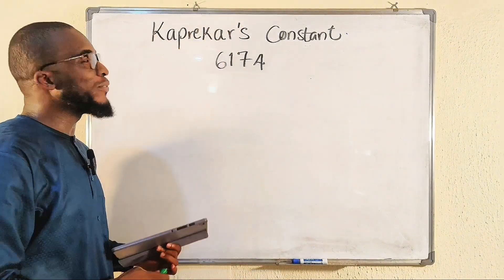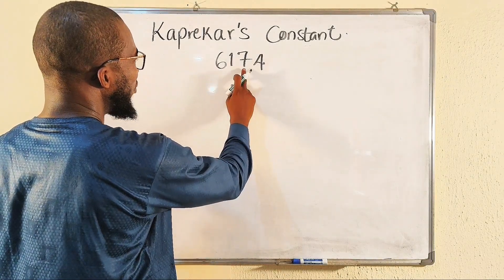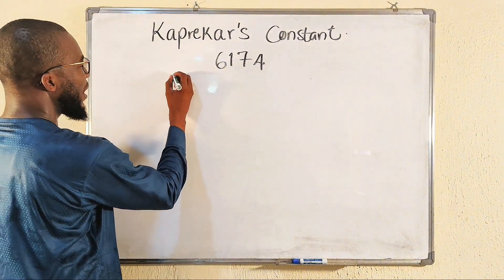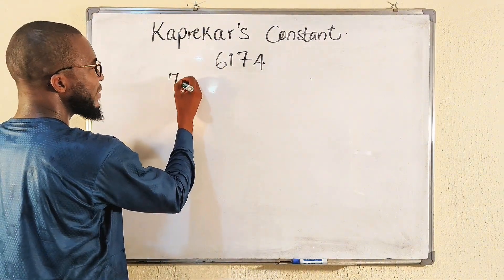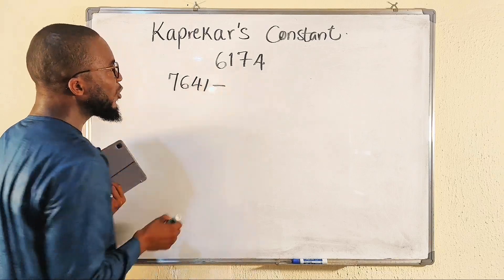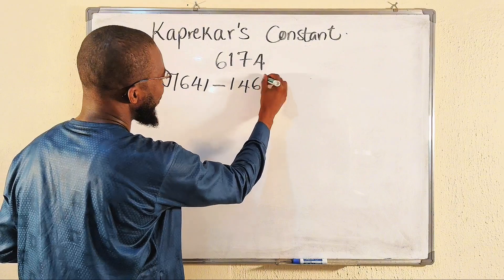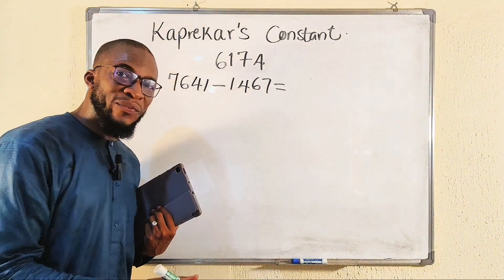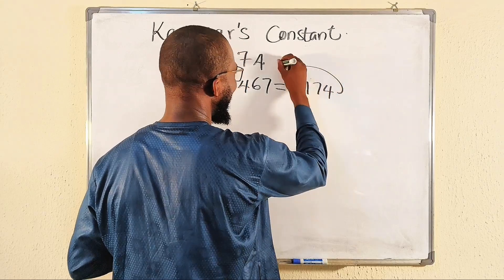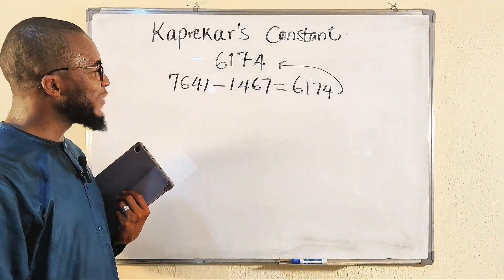So let's start with the number itself. How can we create the biggest possible number? Here it would be seven thousand six hundred and forty-one. The smallest will be one thousand four hundred and sixty-seven. Once you take the difference, you must get 6174 — exactly Kaprekar's Constant. Wow, so this is very nice!